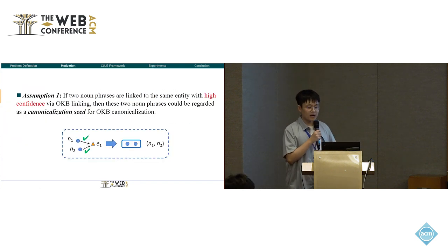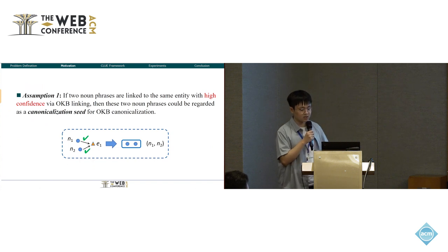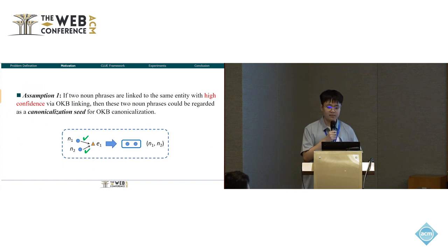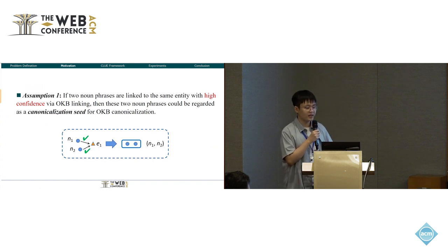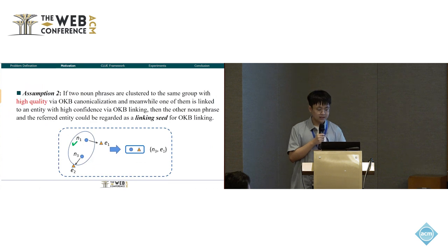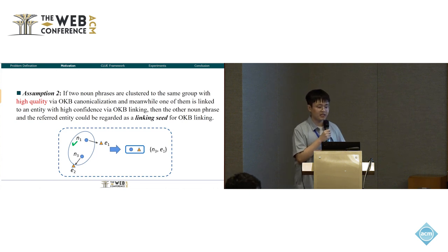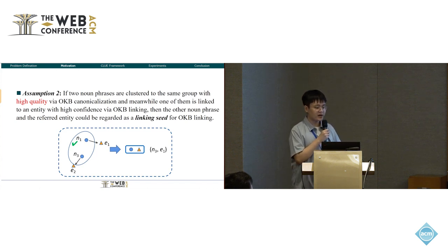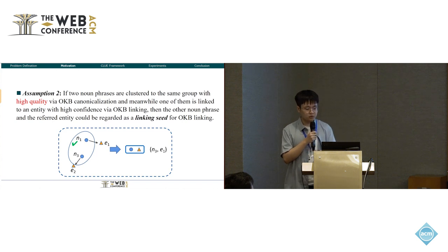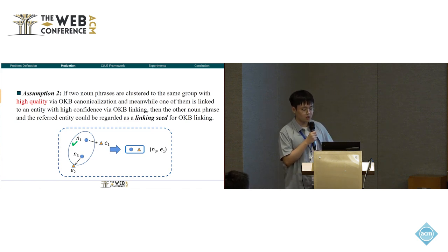To begin with, based on the coupling of these two tasks, we make two crucial assumptions. In assumption one, the green tick means a high confidence linking. If two noun phrases are linked to the same entity with high confidence via OKB linking, then these two noun phrases could be regarded as canonicalized for OKB canonicalization, meaning they should be grouped together. In assumption two, similarly, if two noun phrases are clustered to the same group with high quality via OKB canonicalization, and one of them is linked to an entity with high confidence, the other noun phrase and the referred entity could be regarded as a linking state for OKB linking. As shown in the figure, noun phrases N1 and N3 are clustered into the same group, and N1 is linked to entity E1 with high confidence, so we think N3 should be linked to E1 too, instead of its original counterpart E2.